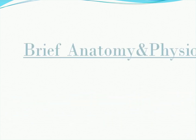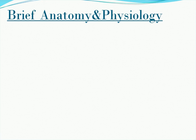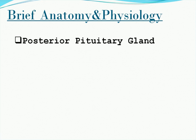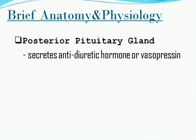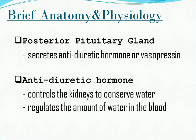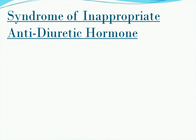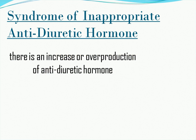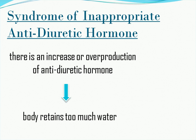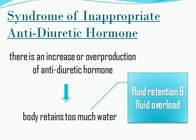Let me first discuss the brief anatomy and physiology relevant to our topic. Normally, the posterior pituitary gland secretes antidiuretic hormone or vasopressin — a hormone made by the hypothalamus and stored in the posterior pituitary gland. ADH is responsible for controlling the kidneys to conserve water and regulates the amount of water in the blood. In the Syndrome of Inappropriate Antidiuretic Hormone, there is an increase or overproduction of antidiuretic hormone causing the body to retain too much water, resulting in fluid retention and fluid overload.